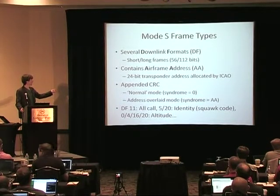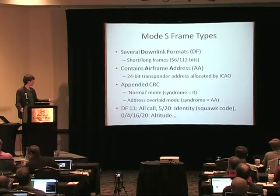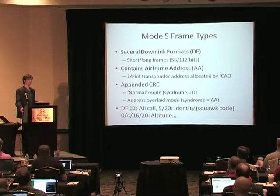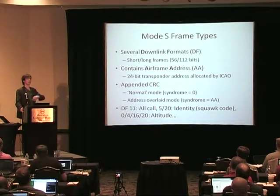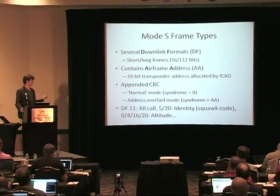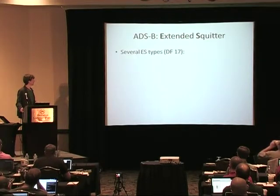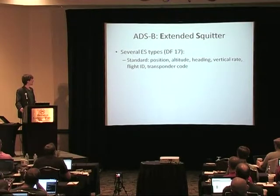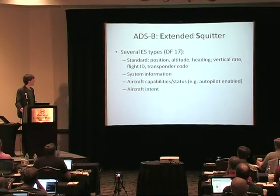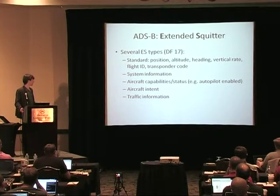The downlink formats are referred to by number. There are particular numbers for particular sorts of messages: the all-call which is basically a ping, the identity which sends the squawk code, and then different ones for altitude, short and long frames, ground-to-air, air-to-air, and so on. With ADS-B, this is the DF-17 — the famous DF-17 — you get position, heading, altitude, flight ID, and additional things like aircraft intent where the autopilot is engaged.